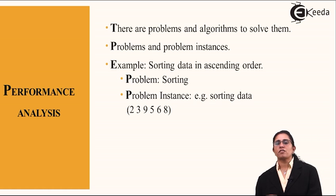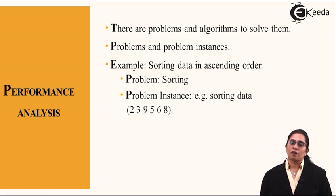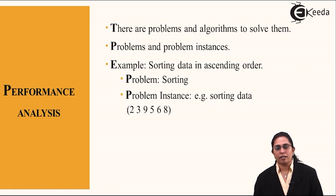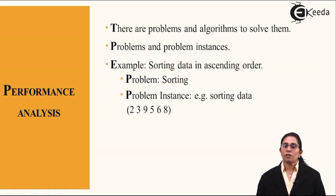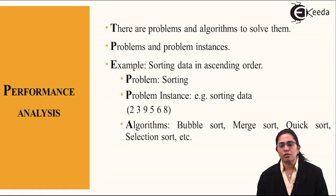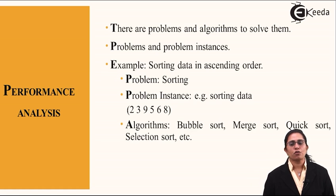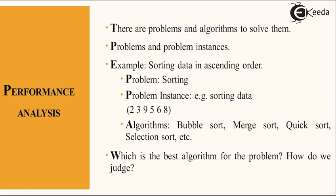Here we can consider a few numbers as 2, 3, 9, 5, 6, and 8. For this instance of sorting data, I have to sort them in ascending order. The various algorithms that are used are bubble sort, merge sort, quick sort, selection sort, and many more. Now, which is the best algorithm to solve this problem and how do we judge?